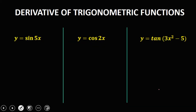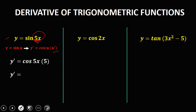We have this given — find the derivative. So we have y equals sine 5x. Since the derivative of sine u is equal to cosine u times the derivative of u, and here u is equal to 5x, y prime is equal to cosine 5x times the derivative of 5x, which is 5. So y prime is equal to 5 cosine 5x.